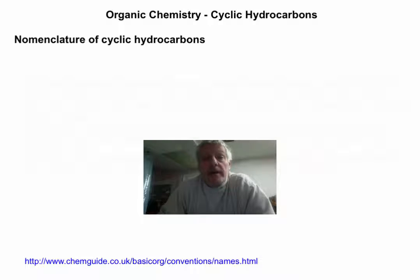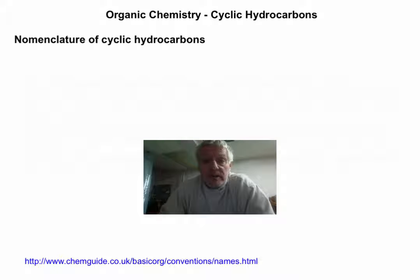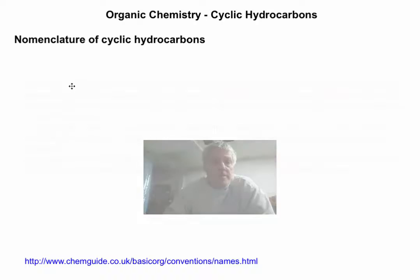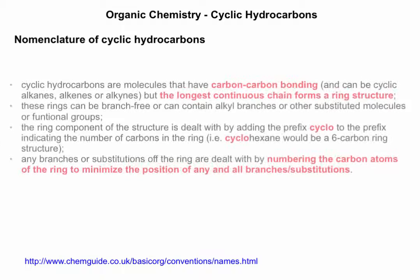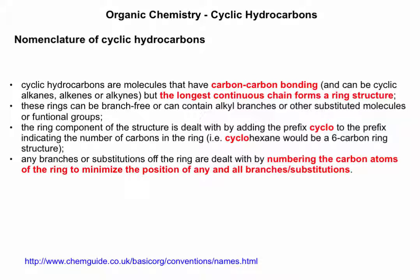In this video, I'm going to go over another type of hydrocarbon — cyclic hydrocarbons. Carbon bonding is common, and if this bonding leads to the formation of a ring structure, they're known as cyclic hydrocarbons. For naming, molecules that have carbon bonding where the longest continuous chain forms a ring — if the longest continuous chain is part of a ring structure, that dictates it's a cyclic hydrocarbon.